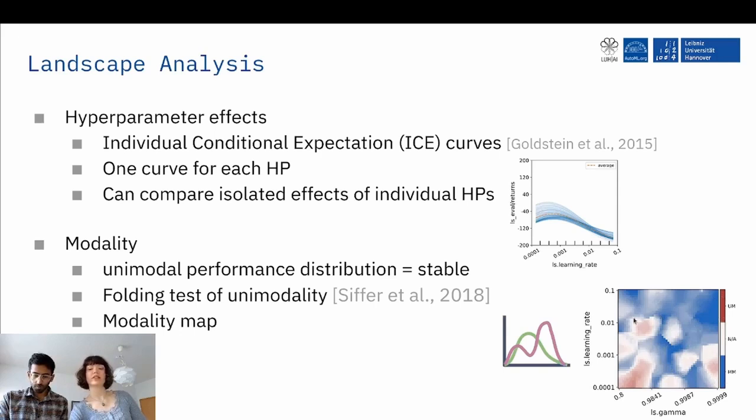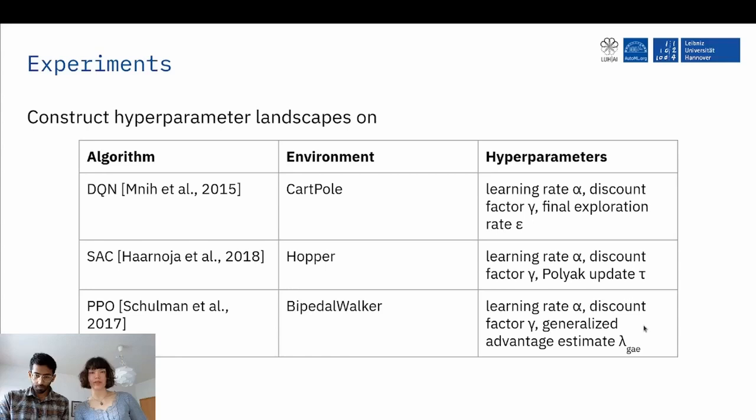So let's look at the experiments. We constructed hyperparameter landscapes on DQN with CartPole, SAC with Hopper, and PPO and BipedalWalker. And we chose to vary hyperparameters, one affecting the optimization process and the other one the policy class, so learning rate alpha and discount factor. And then we have RL algorithm specific hyperparameters like the exploration rate, Polyak update tau for SAC and for PPO the generalized advantage estimate.